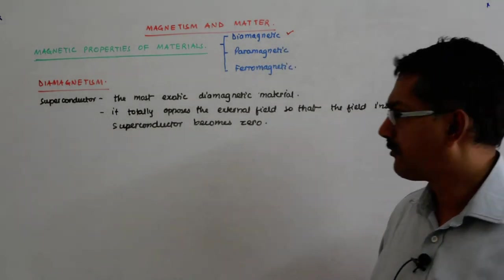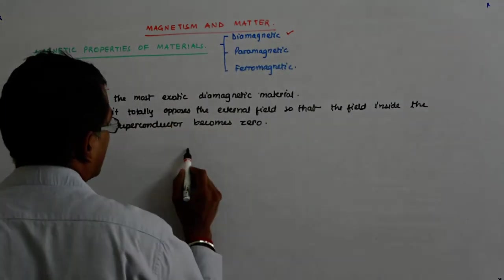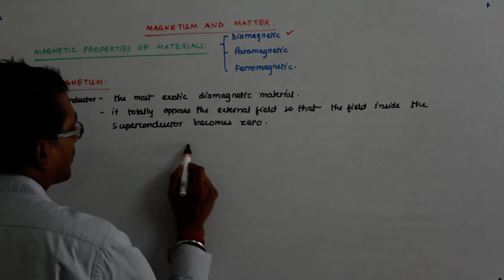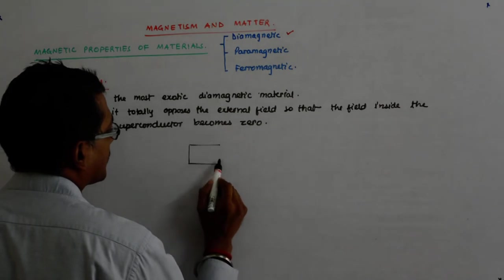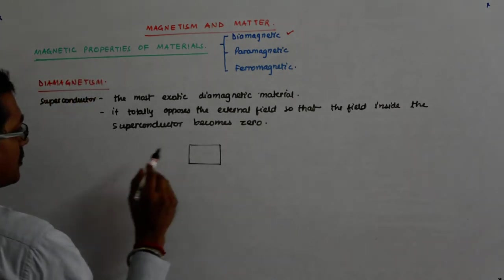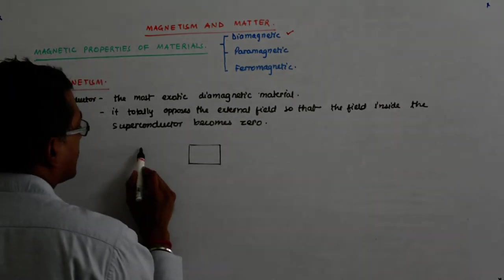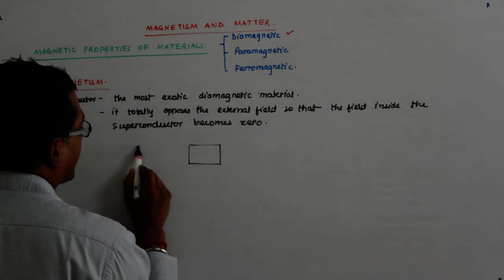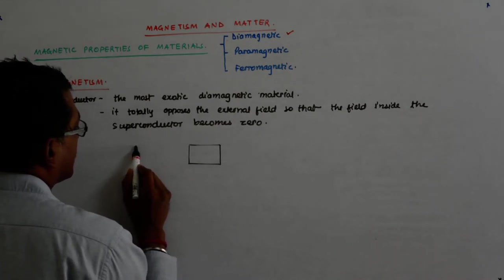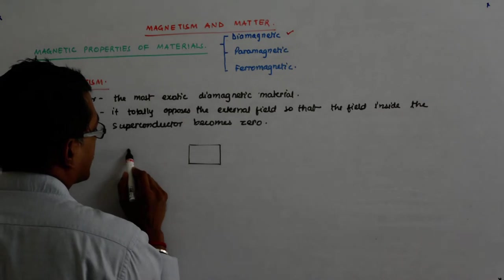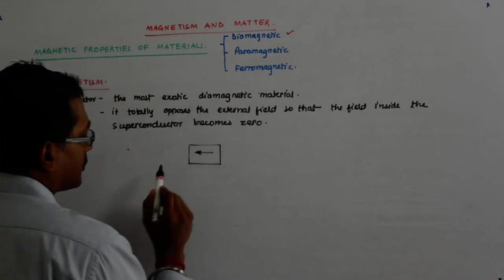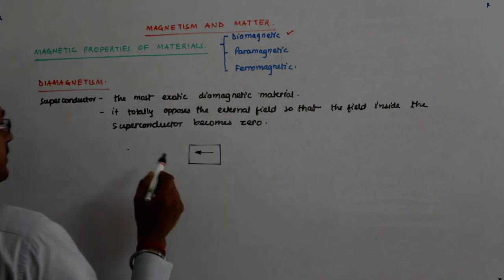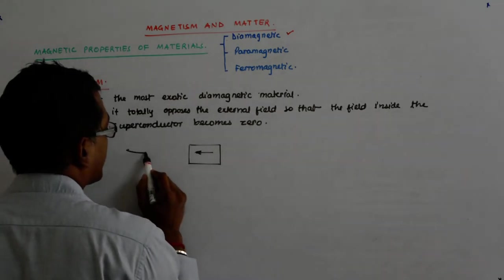Fine? So you have a superconductor and you put it inside a magnetic field, external magnetic field. It opposes you with equal magnitude so that the field inside becomes absolutely zero.